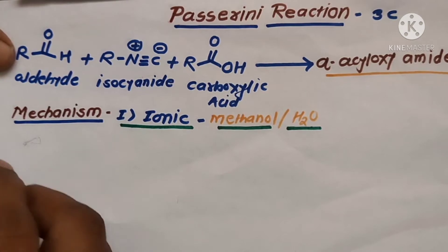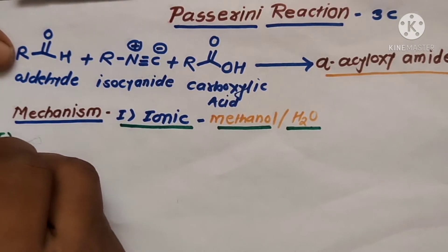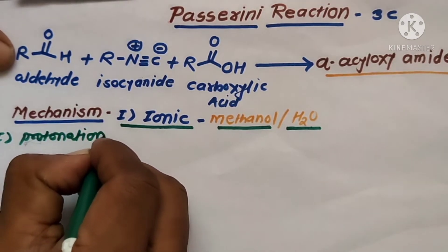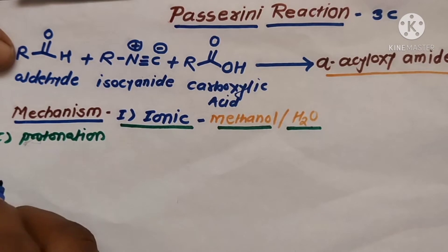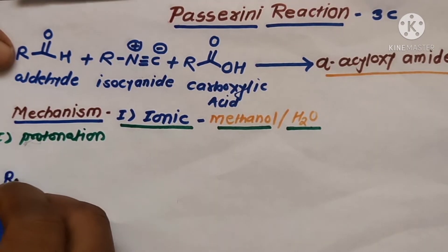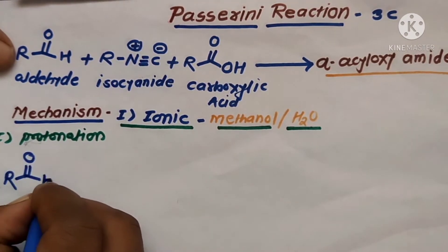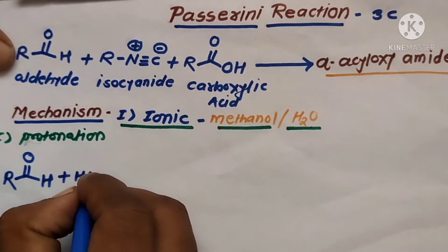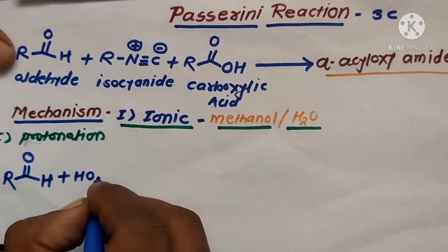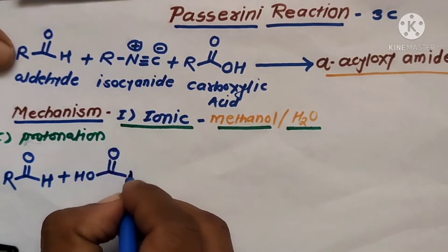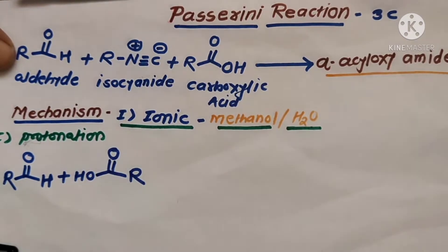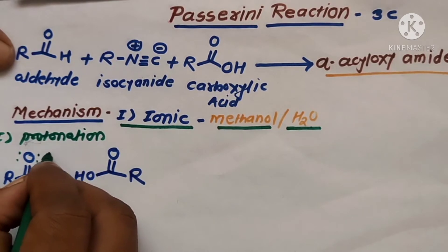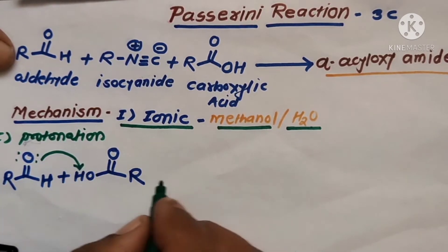In the ionic mechanism with polar solvents like methanol and water, the first step is protonation. In this protonation step, the oxygen containing a non-bonded pair of electrons on the carboxylic acid abstracts a proton from the acid.